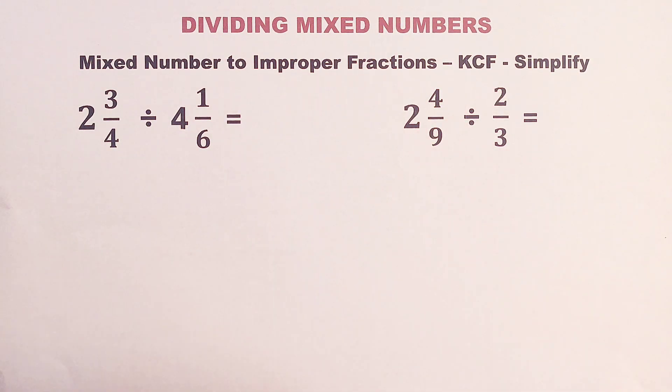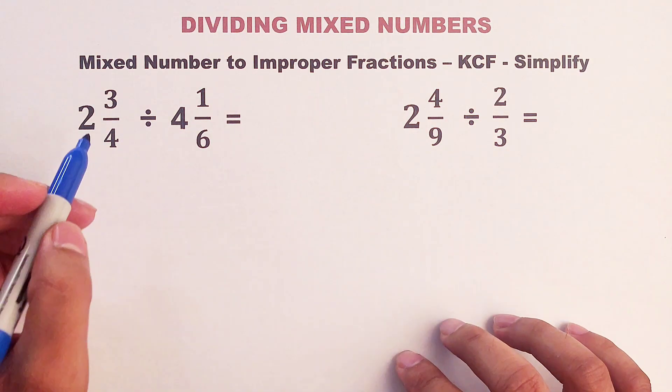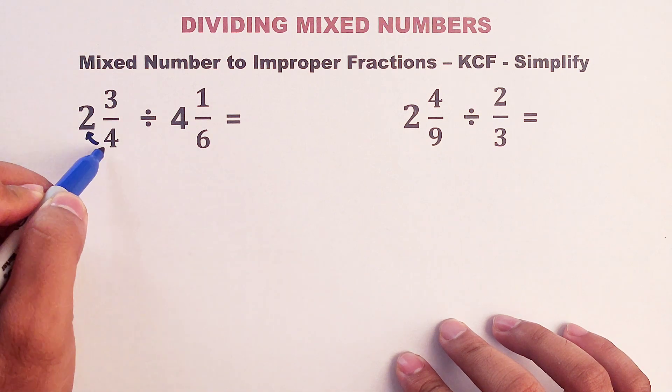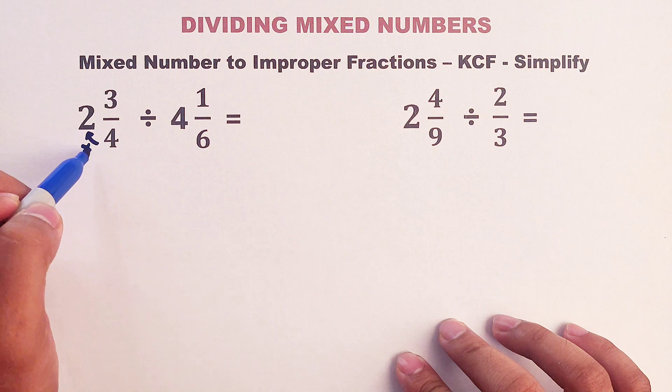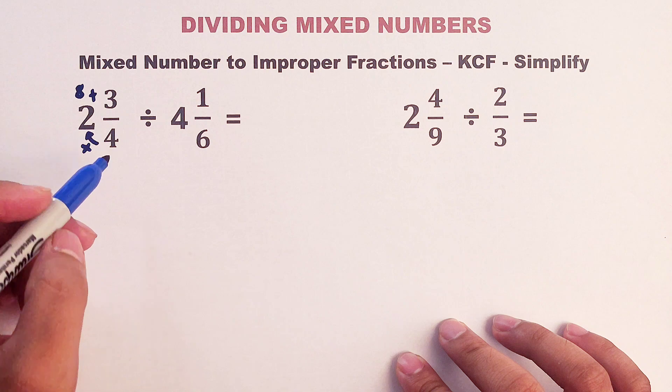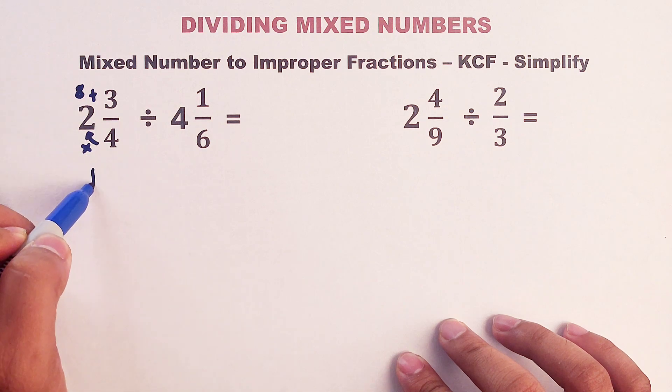Let's start with item number one. We have two and three-fourths divided by four and one over six. To convert this, multiply the denominator and the whole number. This is eight. Then add the numerator. So in this case, this will become 11 over four.